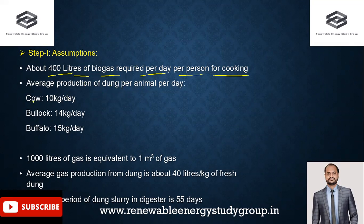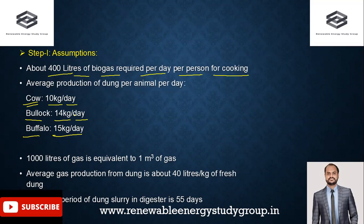For average production of cattle dung on a per-animal basis: a cow produces 10 kg per day, a bullock produces 14 kg per day, and a buffalo produces 15 kg per day. When designing or installing a biogas plant, we must ensure we have the requisite supply of cattle dung as slurry. Also, 1000 liters of gas is equivalent to 1 cubic meter of gas.